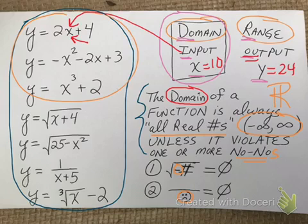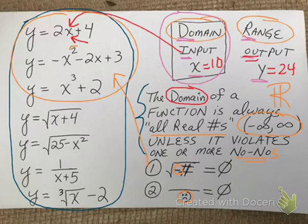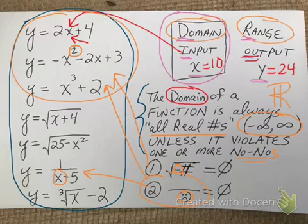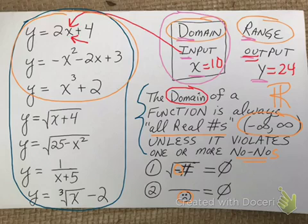Looking at the first three functions, there aren't any square roots. This is an exponent of two, which is a square — don't confuse a square with a square root. These first three functions do not have a square root, and there are no fractions with letters in the bottom like this one here, which has a letter in the bottom. So for the first three problems, the no-no's don't apply, and we would say the domain is all real numbers. Unless it violates one of the two no-no's, it's always going to be all real numbers.